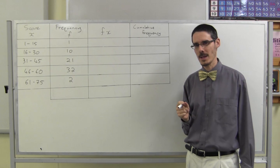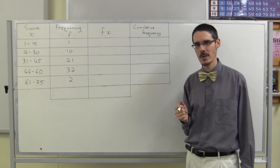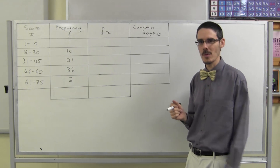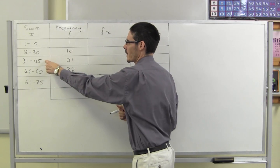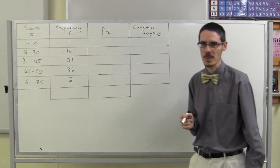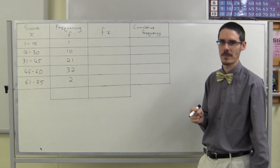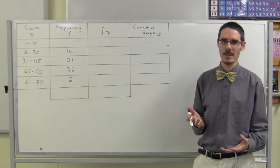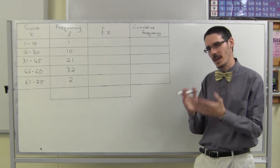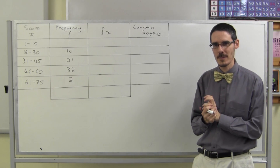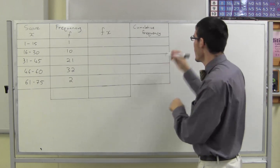What if you have to find the mean, the median, and the mode from a frequency table with grouped data instead of individual scores? Well, we're going to use basically the same method, but the mean is going to be a little bit different. Let's do the other two first.